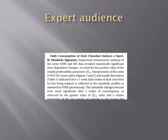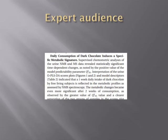Here is an excerpt from the scholarly article: "Supervised chemometric analyses of the urine NMR and MS data revealed statistically significant time-dependent changes, as noted by the positive value of the model predictability parameter, Q2Y value." You can tell it is meant for an audience who already knows a lot about the subject area, because there is no explanation of what a chemometric analysis is or what it does. Data and statistics are presented with the expectation that the audience can make sense of them. The vocabulary is information-dense with nuances to pick apart, like "statistically significant time-dependent changes." This kind of article can be a lot of work to read for a beginner, but it is worth it — even if you have to use reference books to understand the jargon — because this is the original material, not interpreted or pared down in any way.